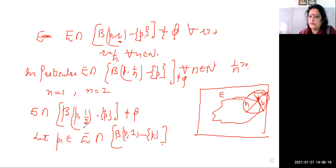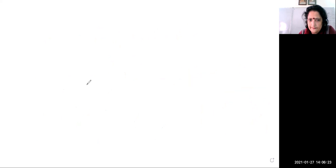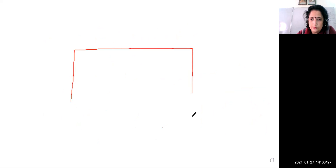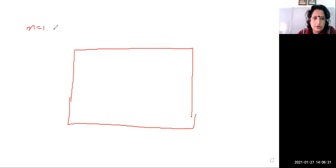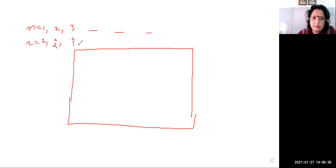Now let n equal 2. The radius is now smaller — 1/2. If the radius is smaller, then the ball will be smaller. As we increase n to 1, 2, 3, the radius becomes 1/2, 1/3, and so on — the radius gets smaller and smaller.